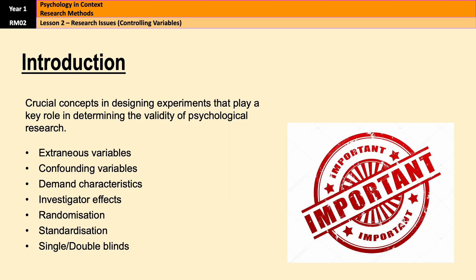In this video, we're going to be exploring some crucial concepts in designing experiments that play a key role in determining the validity of psychological research — you can see those concepts on the screen now. They are very important in both year one and year two of the course, they come up regularly in exams, and they're also very common in evaluation points based on poor methodology. The first four items in that list are problems the researcher needs to be aware of, and the last three are ways of dealing with those problems. We'll go through each of them over the next ten minutes or so, and by the end of the video you'll understand what all of those terms mean, how they impact the research, and why controlling them is essential for producing reliable and valid results.